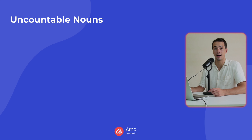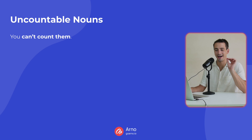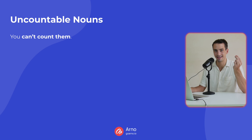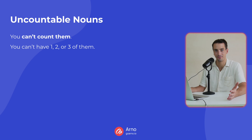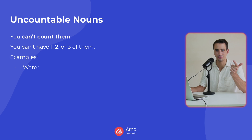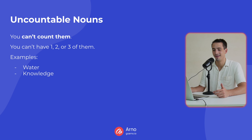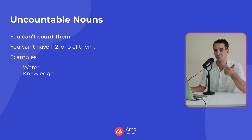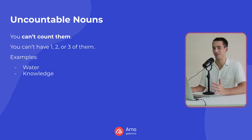Let's now talk about uncountable nouns. Uncountable nouns cannot be counted — 'un' means not, so literally uncountable means not countable. Which means you can't have one, two, or three of them. Examples: water — you can't have one water, two waters, or three waters. Knowledge — you can't have one knowledge or two knowledges. Money, happiness — you can't count them.